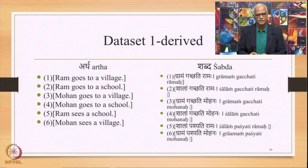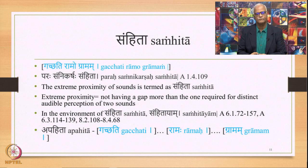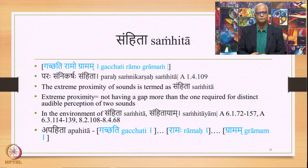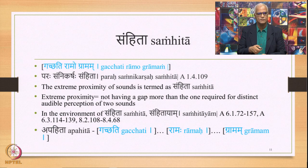On the backdrop of this entire derivation process, let us study the technical terms mentioned in the outline. We derive this particular dataset from the artha, we derive these shabdas, and then they are expressed in audible speech. Let us see what is Samhita. Samhita is extremely important because this term helps Panini give sutras to account for Vedic forms in his grammar. Gacchati Ramo Gramam with some minimum space in between is called Samhita. The definition of Samhita is given in Panini's grammar by the Sutra 1.4.109 which reads: Parah Sannikarsah Samhita. Sannikarshah is proximity; Parah is extreme proximity.